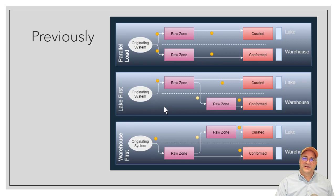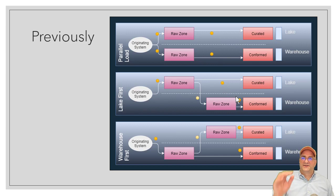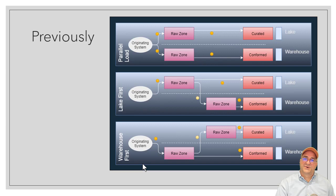If we do a lake-first strategy, we have one hard transform to load it in using some tool, then that raw zone would be copied into another raw zone, and then we'd have two transforms using different tools — one in the lake and one in the warehouse. In a way, the number of transforms there is the same, and the warehouse-first approach is actually the same thing.